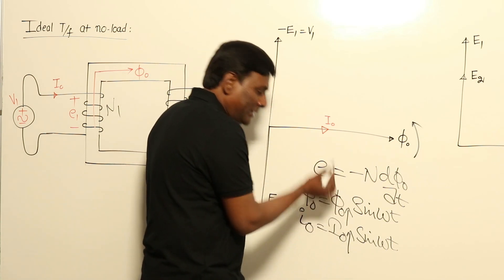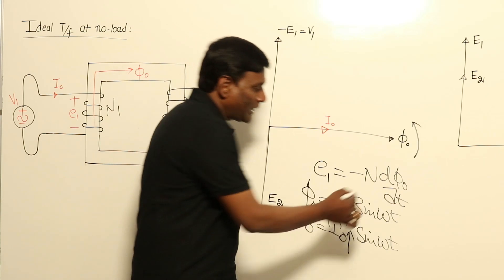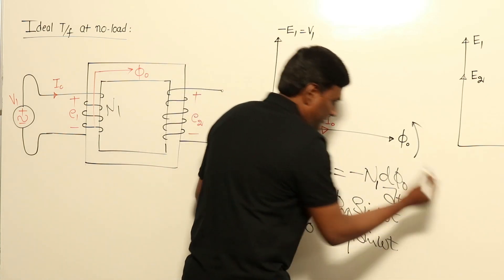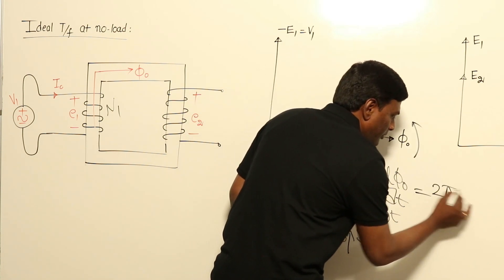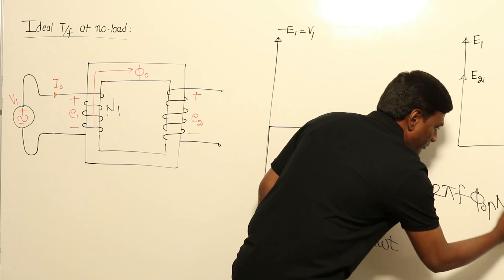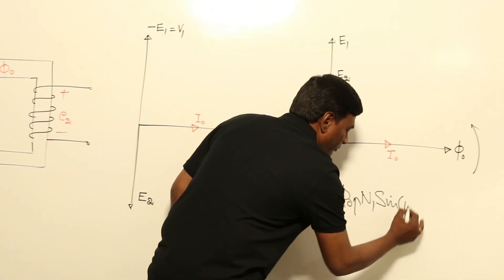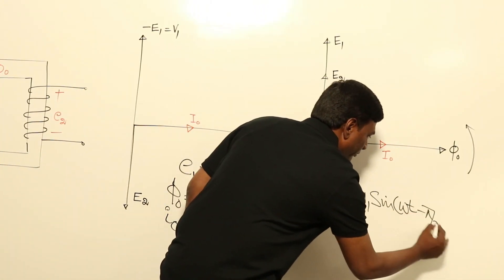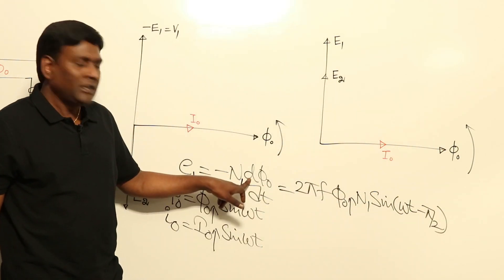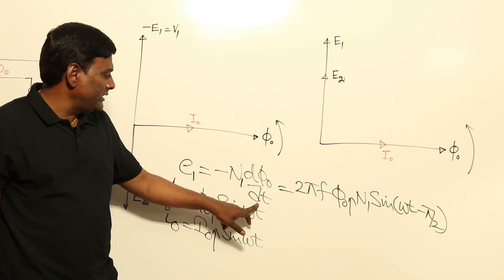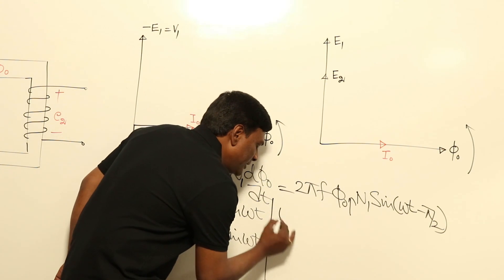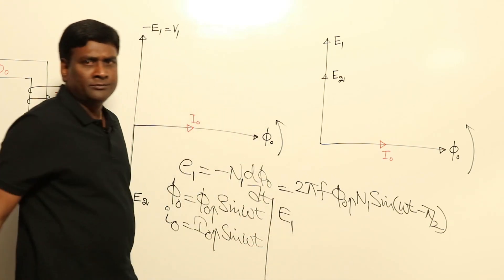E1 primary number of turns N1, such that this equation you are going to get. Just place Φ0 value here and differentiate it with respect to t and equate - automatically you are going to get this equation only.